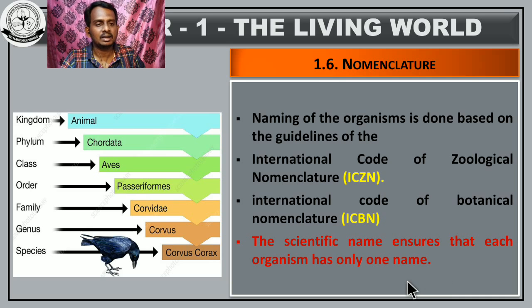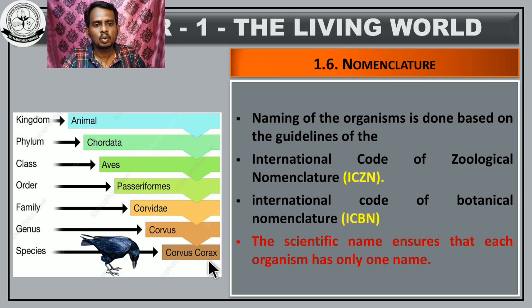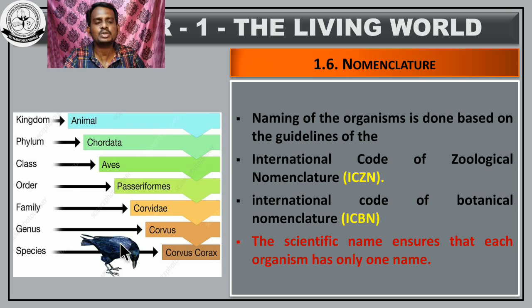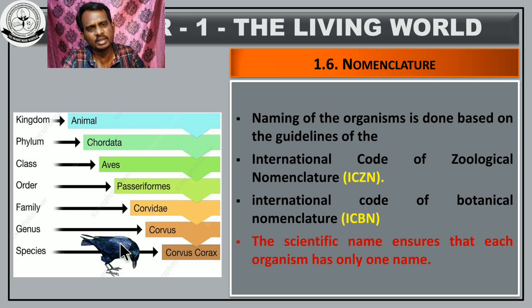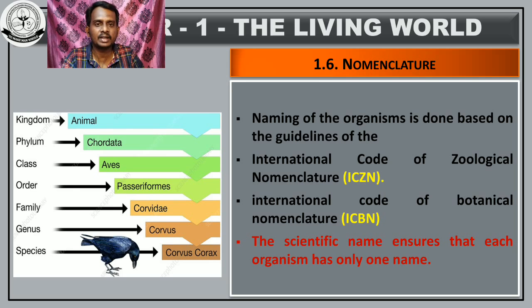The scientific name ensures that each organism has only one name. For example, this is our Indian crow — Corvus corax — this name is assigned only for this organism. Human being means Homo sapiens — that's all. If there is any variation among Homo sapiens, a subspecies name is added: Homo sapiens sapiens — this is the actual zoological name for human beings.